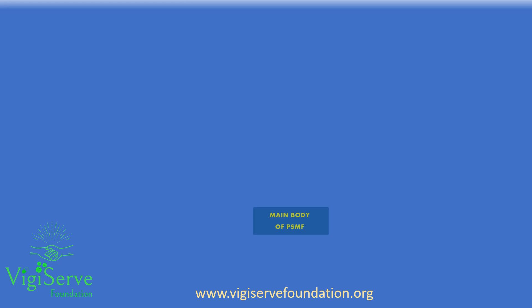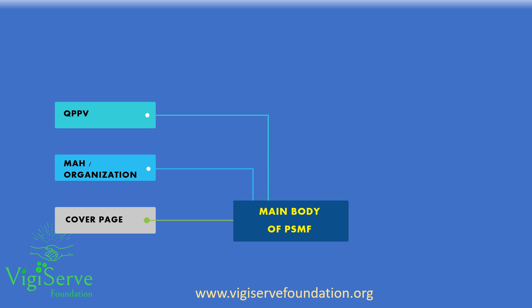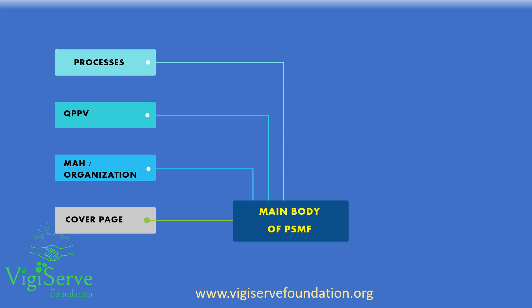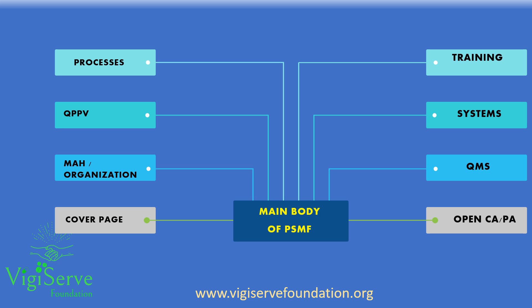The main body is the most important section of the PSMF. The cover page is an integral component of the main body and includes the unique number assigned by the regulatory agency or the UDRAVigilance system to the PSMF. The cover page also includes the name of the MAH, the QPPV responsible for the pharmacovigilance system, as well as the relevant QPPV third-party company name if applicable. The main body also includes the list of PSMFs for the MAH and the date of preparation or last update.